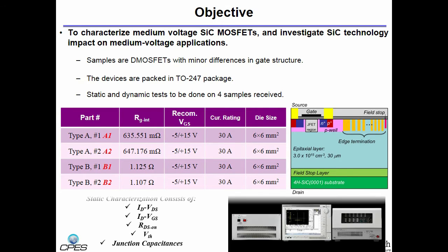The static characterization consists of the output characteristic, transfer characteristic, on-state resistances, threshold voltages, and junction capacitances. These are all done by B1505 curve tracer of Agilent Technologies.